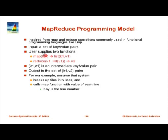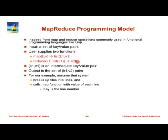Assuming the data is already available, the user provides two functions. Map takes a key and a value and returns a list of key-value pairs. Reduce takes a key and a list of values and returns a single value. Reduce is like a group-by operation — it groups all the values output by map. Map is like taking some input and creating a number of tuples where K1 is essentially the group-by attribute and V1 are the remaining attributes. Once the grouping has been done, all the values in a particular group are made available to the reduce function, whose job is essentially to do the aggregation and return the aggregate value.